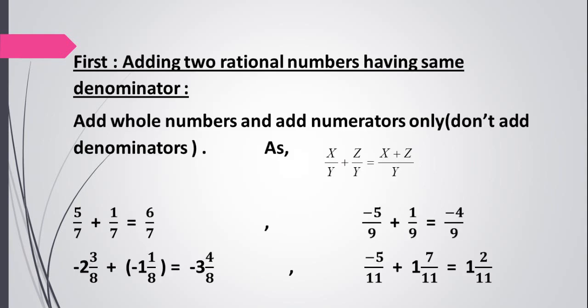First, when adding two rational numbers having the same denominators, add whole numbers and add numerators only. Don't add denominators. As x over y plus z over y, we will write the denominator as y and add only the numerators x plus z.